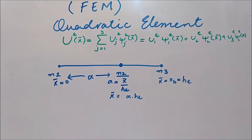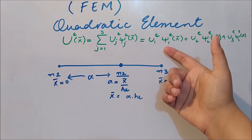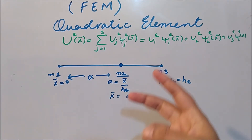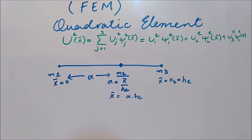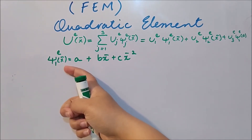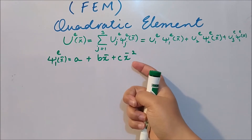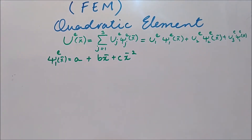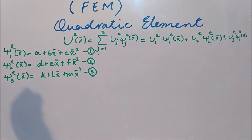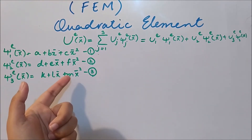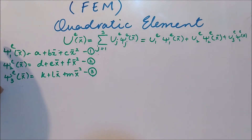We will start, just as we did in the previous video, by writing a general equation for these shape functions. Because we have a quadratic element (not a linear element with only two nodes), the general shape function would be a quadratic equation. So ψ1(x̄) = a + b·x̄ + c·x̄², which is a general quadratic equation. We write ψ2 and ψ3 similarly as general quadratic equations. So we have three general quadratic equations for ψ1, ψ2, and ψ3, where a, b, c, d, e, f, and k, l, m are the variables we need to find.